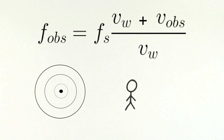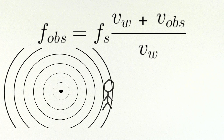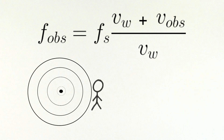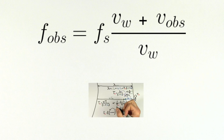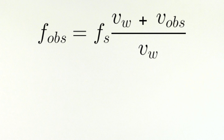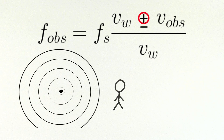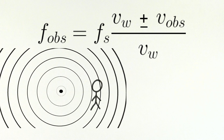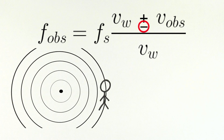But this formula only works for the case of an observer moving toward a source. What if the observer is moving away? Since you're running away from the speaker instead of toward it, you can just stick in a negative sign in front of the speed of the observer. So here we have a single equation that describes the Doppler shift experienced by an observer moving toward or away from a stationary source of sound. Use the plus sign if you're moving toward the source, and use the negative sign if you're moving away.